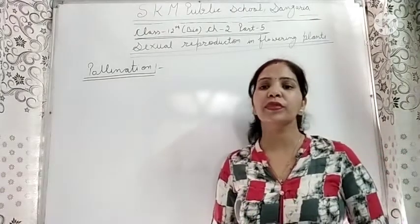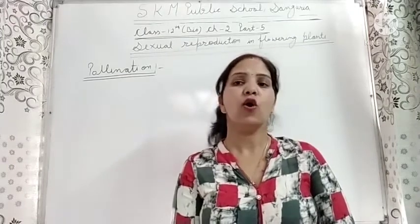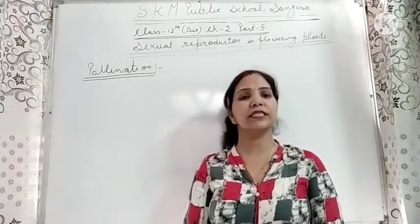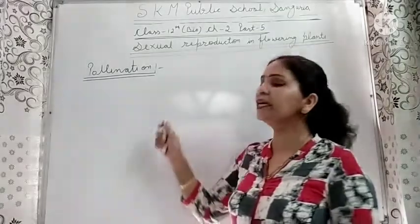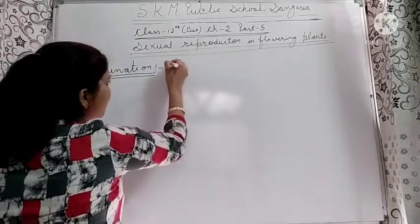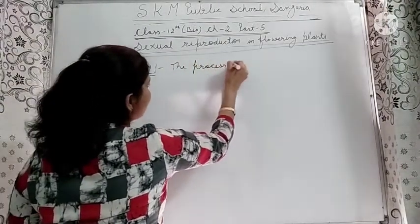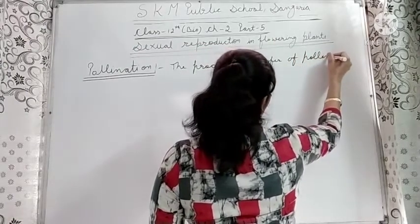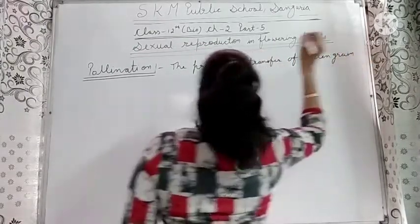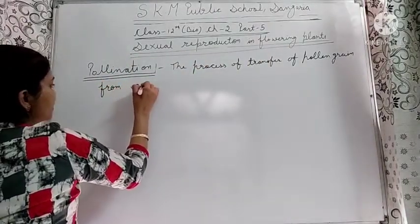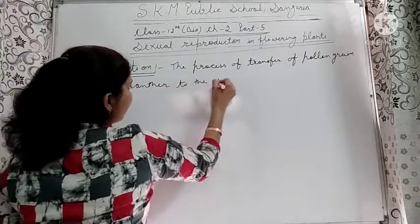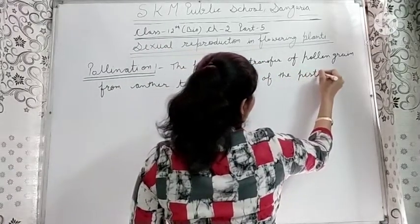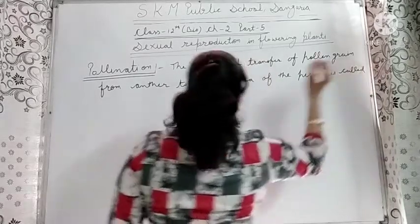What is pollination? As you have learnt in your previous classes, pollination is the process of transfer of pollen grain from anther to stigma of the pistil. This transfer from anther to the stigma of the pistil is called pollination.